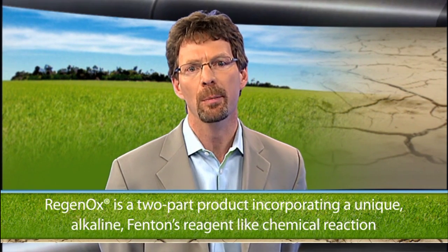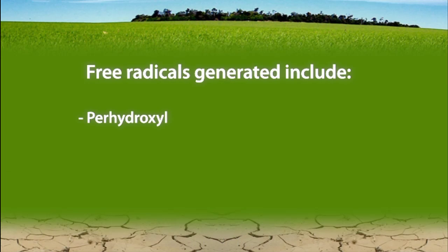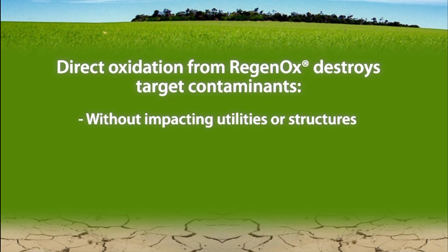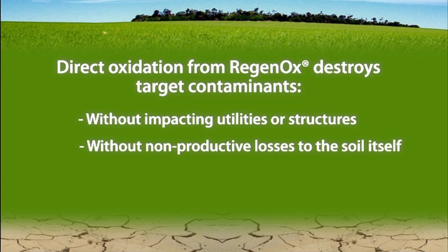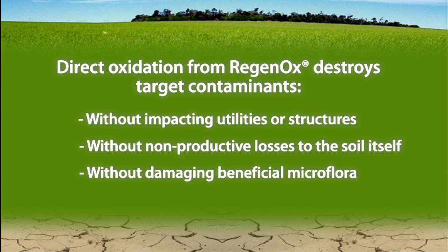The result of this developmental research is a unique two-part product that incorporates an alkaline Fenton's reagent-like chemical reaction with a regenerative surface catalyst. Contaminants within the groundwater and soil moisture absorb onto the surface of the catalyst, which in turn mediates the alkaline Fenton's-type reaction, generating a suite of free radicals such as the perhydroxyl, hydroxyl, and superoxide radicals. These radicals, along with direct oxidation from the amendment itself, act to destroy the target contaminants in the subsurface without impacting utilities or structures, without significant non-productive reactive losses onto the soil itself, and without damage to the beneficial soil microflora important for ongoing biodegradation.